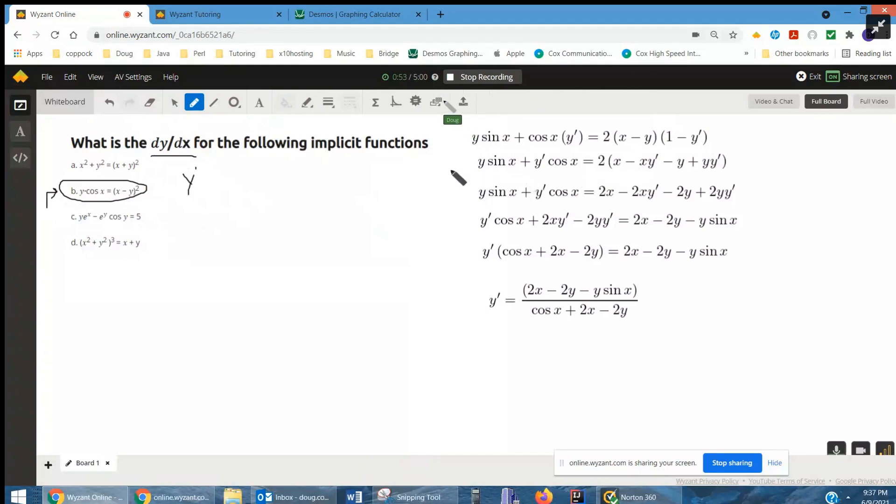So in the next two rows, I just simply multiplied these two binomials together and distributed this 2.